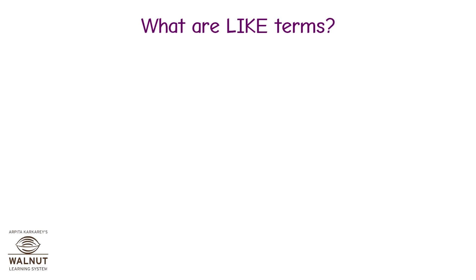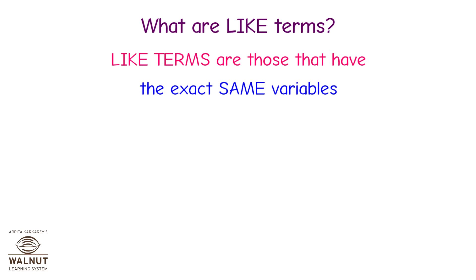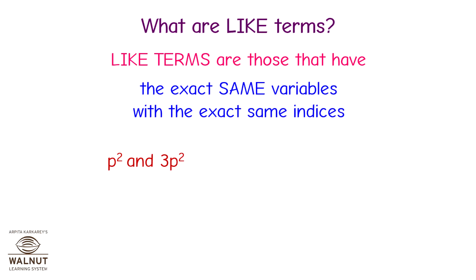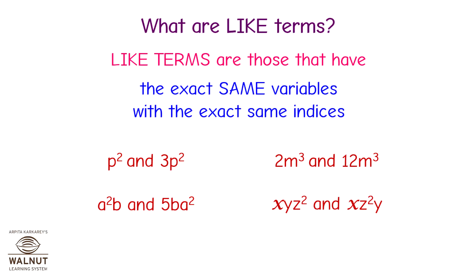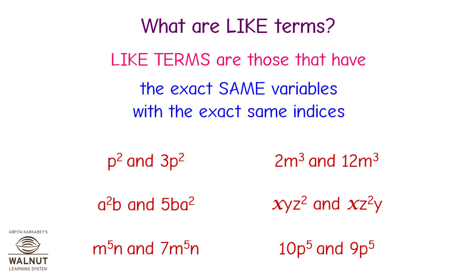What are like terms? Like terms are those that have the exact same variables with the exact same indices. For example: P² and 3P²; 2M³ and 12M³; 8A²B and 5BA²; XYZ² and XZ²Y; M⁵N and 7M⁵N; 10P⁵ and 9P⁵. All these are like terms.